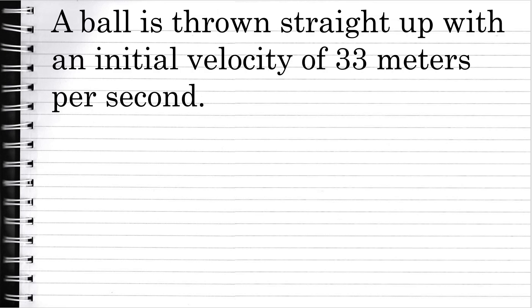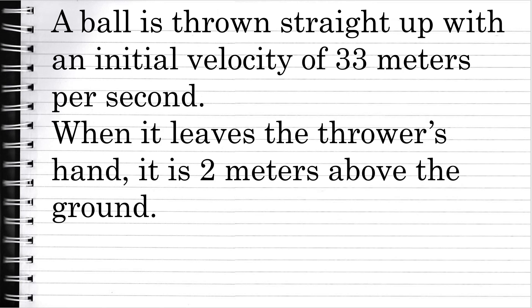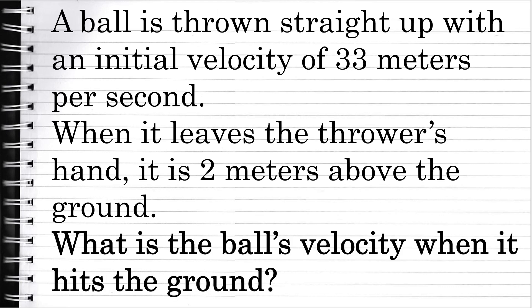In this video, we will go through the process of solving a problem involving a free-falling object using calculus. The problem is this: a ball is thrown straight up with an initial velocity of 33 meters per second. When it leaves the thrower's hand, it is 2 meters above the ground. The question is: what is the ball's velocity the instant it hits the ground? Let's begin.